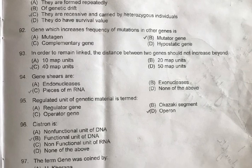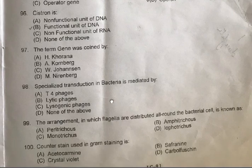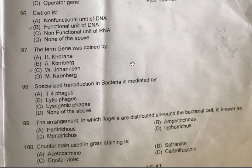Question 97: The term 'gene' was coined by — A: Khorana, B: Cohenberg, C: W. Johannsen, D: M. Nirenberg. Option C, W. Johannsen, is correct. Question 98: Specialized transduction in bacteria is mediated by — A: T-phage, B: Lytic phage, C: Lysogenic phage, D: None of the above. The correct answer is C, Lysogenic phage, also called temperate phages.